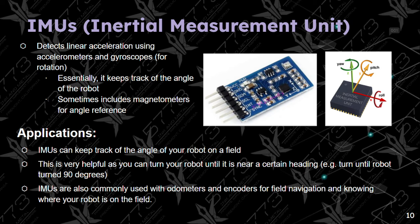This is the IMU, or inertial measurement unit. It detects linear acceleration using accelerometers and gyroscopes. Essentially it keeps track of the angle of the robot, and it sometimes includes magnetometers for angle reference. IMUs keep track of the angle of your robot on a field, which is very helpful — for example, you can turn your robot 45 degrees or 90 degrees and make it stop. It is used with odometers and encoders for field navigation to know exactly where your robot is on the field and what its heading is.